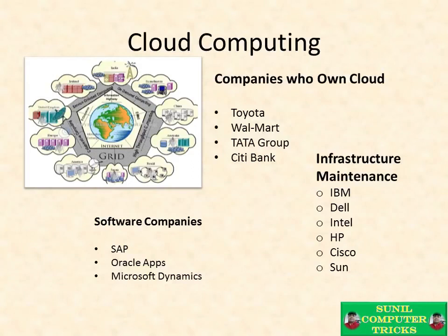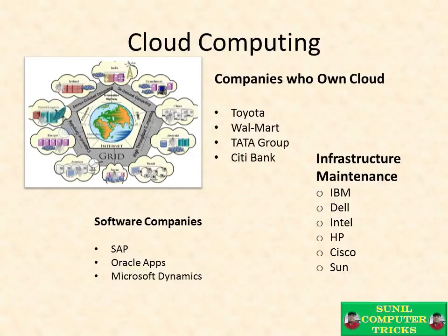One important point is that Toyota is an automobile company — they focus only on their core work. They do not want to manage IT infrastructure themselves. So they outsource the maintenance and infrastructure setup to other companies like IBM, Dell, Intel, HP, and Sun. These companies maintain the infrastructure and provide technical services. This is cloud computing.